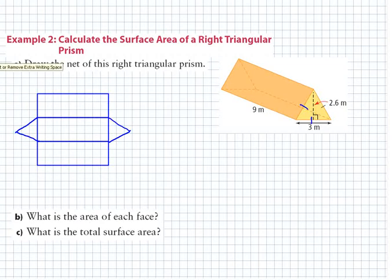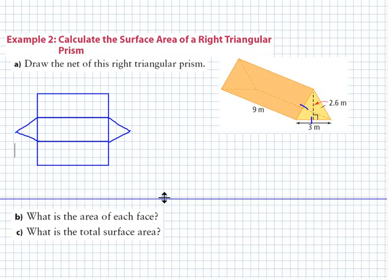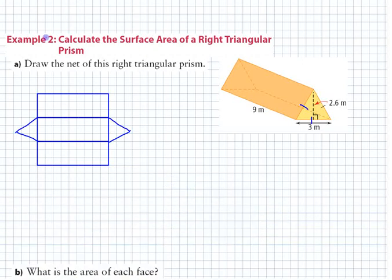If you have to make a formula for this, if you're trying to make a formula for this, I would start by labeling each of these. Which ones are the same here? Which ones are the same? Which ones are different?